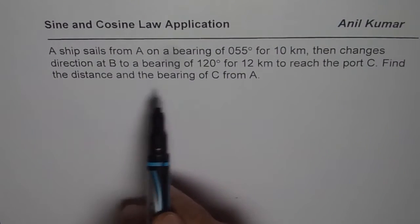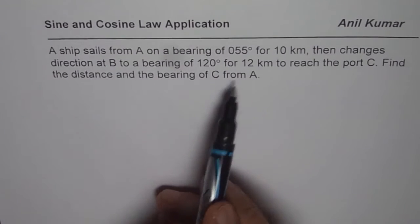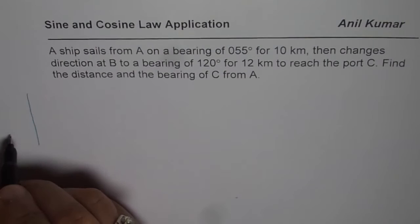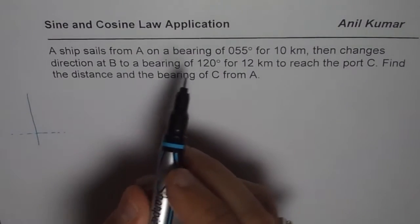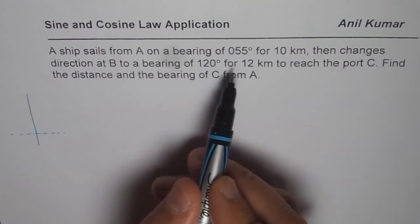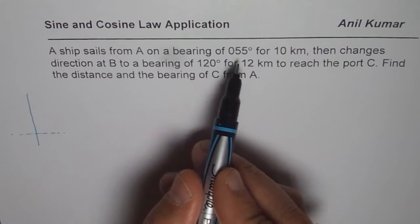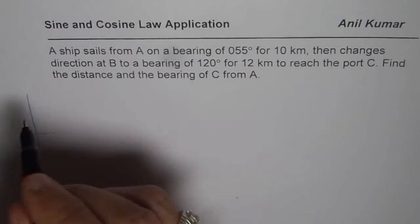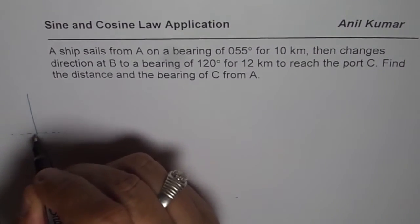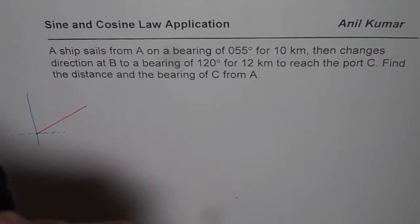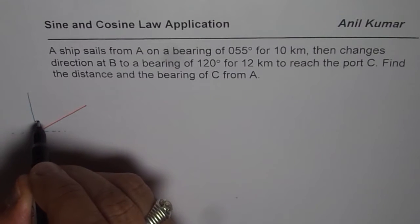Find the distance and the bearing of C from A. Let's try to sketch this diagram. Let's say that is our north. We always go with respect to north whenever we are talking about bearing angle. 055 is clockwise from north. So 055 from north means kind of like this. That could be bearing from north of 055, meaning this angle is 55 degrees.